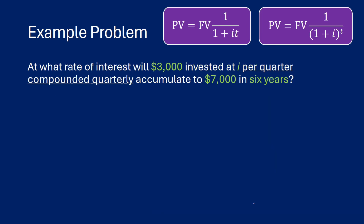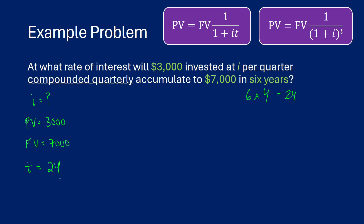Here's one last problem that's a bit more interesting. At what rate of interest will $3,000 — our present value — invested at i per quarter compounded quarterly, accumulate to $7,000 in six years — our future value? For our t, we might think it's six, but we're compounding four times per year over six years, which means 24 total periods. So t equals 24, which is six times four.